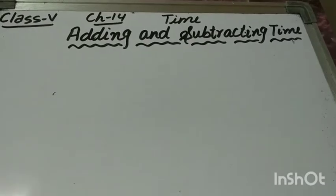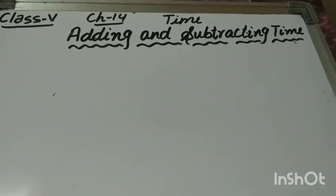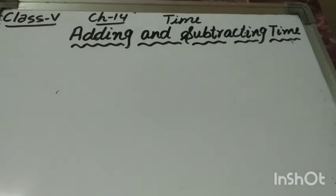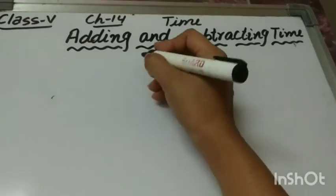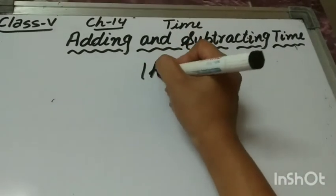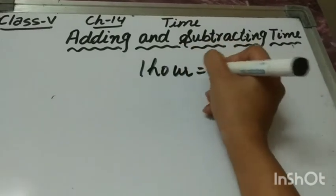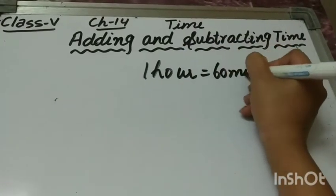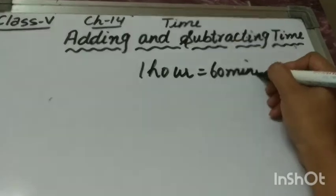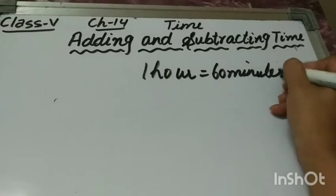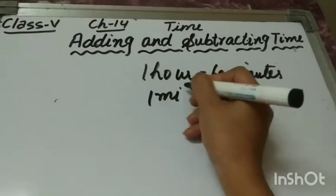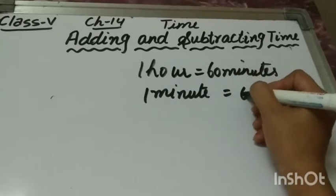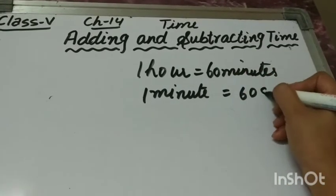How to add and subtract time? As you already know the different measures of time: 1 hour is equal to 60 minutes and 1 minute is equal to 60 seconds.